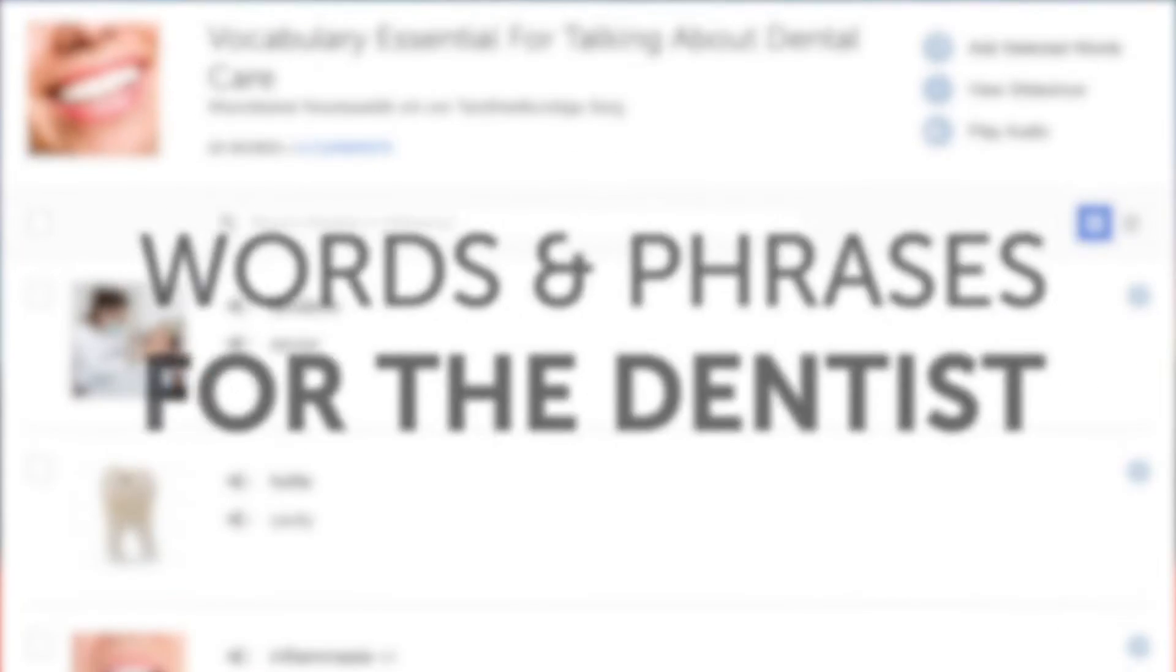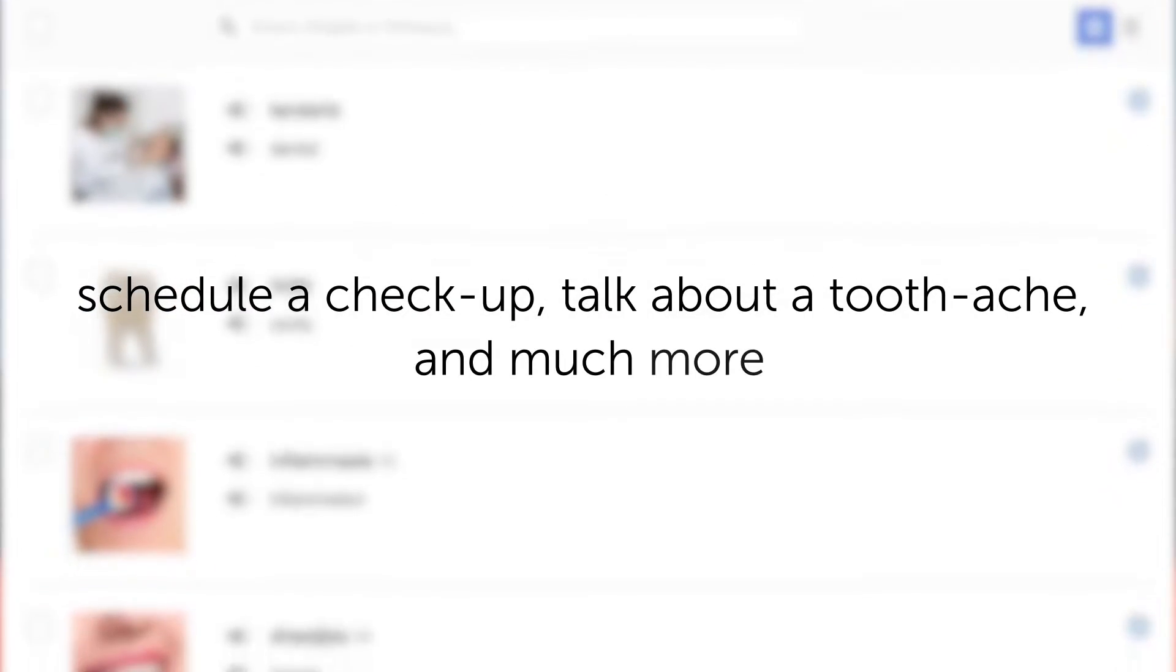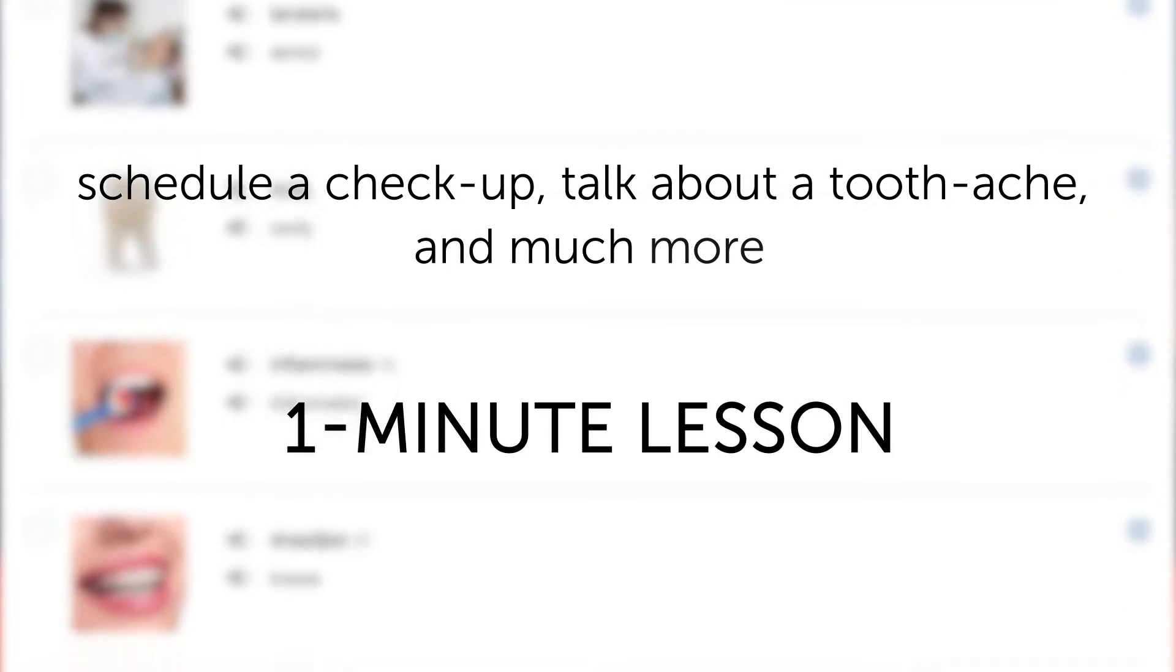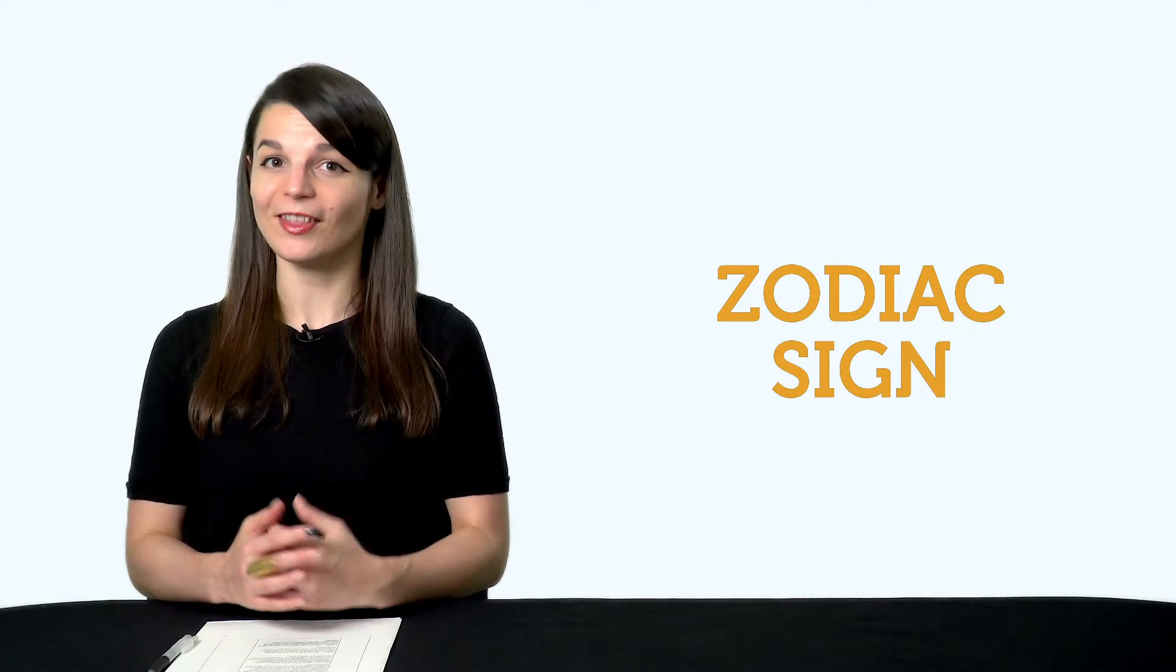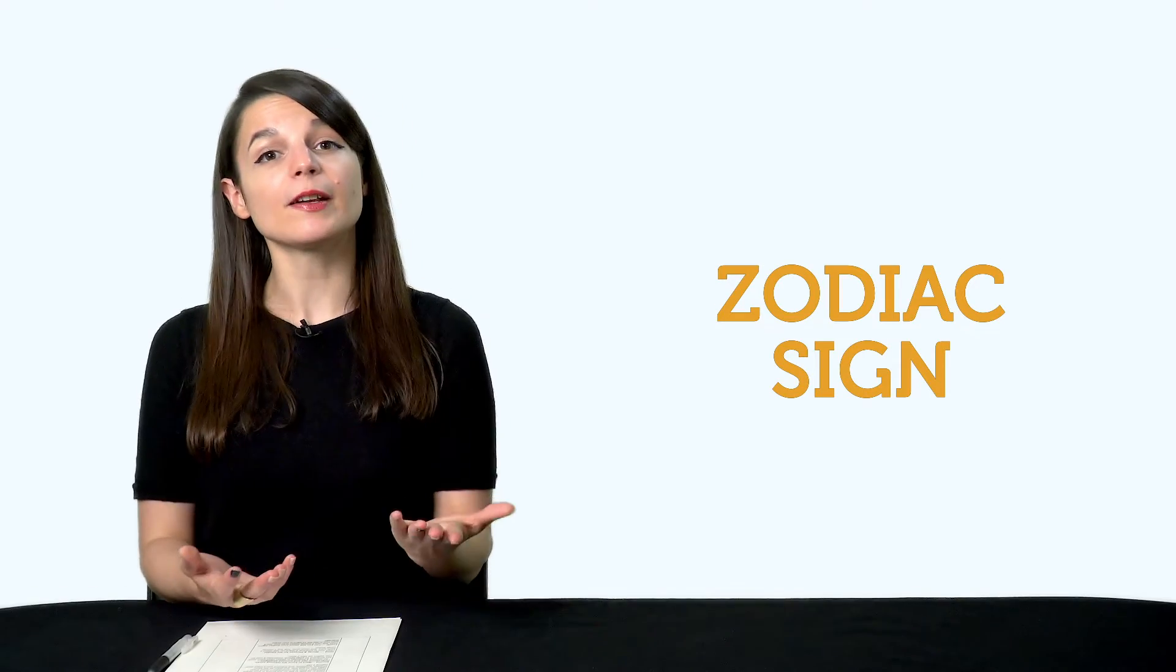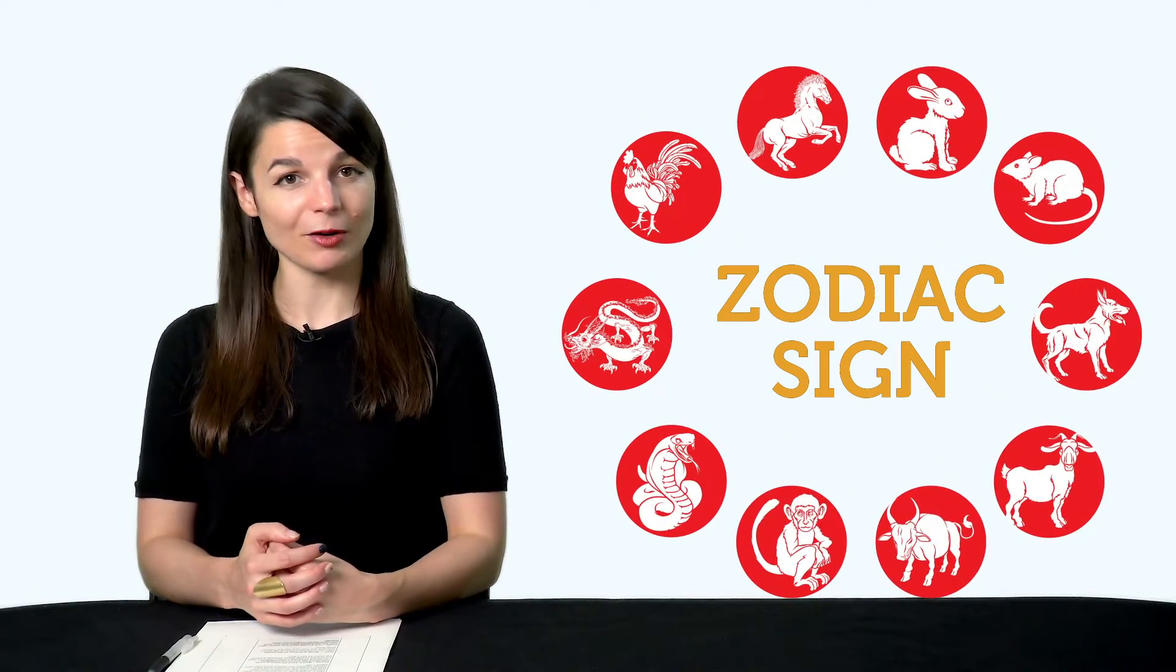Third, words and phrases for the dentist. Learn how to schedule a checkup, talk about a toothache, and much more with this one-minute vocab lesson. Fourth, can you talk about your zodiac sign? If not, then this next one-minute lesson is for you. You'll learn how to say the 12 signs in your target language.